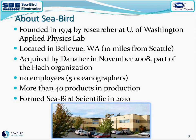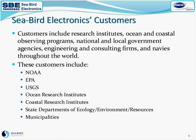Seabird was founded in 1974 by a researcher from the University of Washington Applied Physics Lab. We're located just outside of Seattle. We were acquired by Danaher and now are part of the HAAC organization. We work very closely with HAAC HydroMet, particularly in the U.S. and Canada. We have 110 employees, five oceanographers, and more than 40 products in production. We formed Seabird Scientific in 2010. Our customers are worldwide, working at research institutes, ocean and coastal observing programs, national and local government agencies, engineering and consulting firms, and navies throughout the world — including NOAA, EPA, USGS, Ocean Research Institutes, Coastal Research Institutes, State Departments of Ecology, and Municipalities.